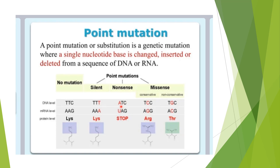In the case of nonsense mutation, TTC is changed to ATC, and the messenger RNA formed is UAG. This causes a stop codon, giving a stop signal that terminates protein synthesis. In the case of missense mutation, TTC is changed to TCC, so instead of lysine, arginine comes in its place. Or if TGC, then threonine comes instead.